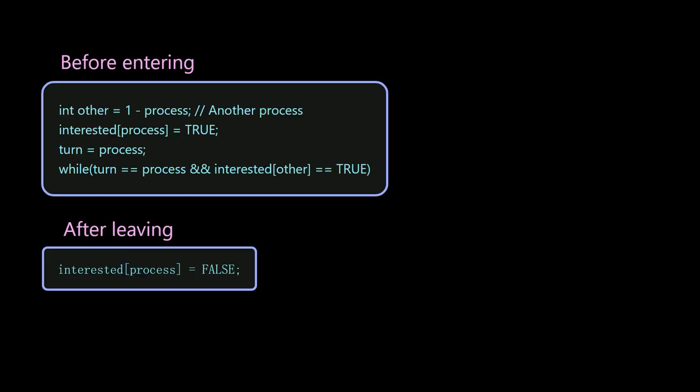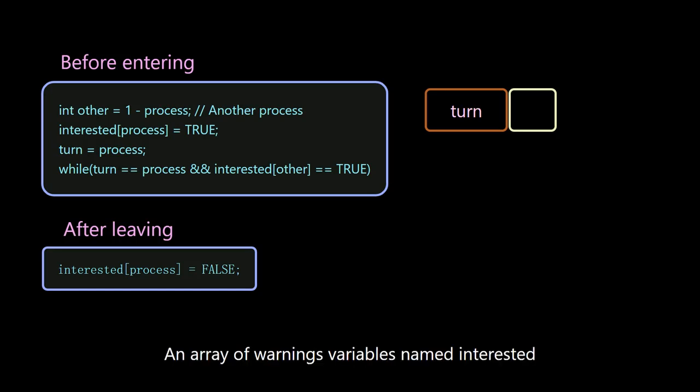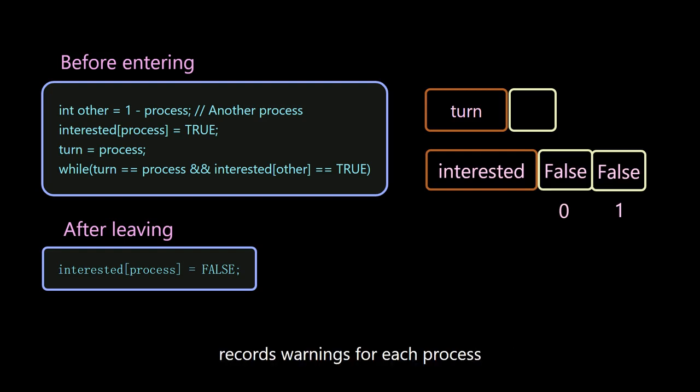This is its main code. We need a lock variable turn, which represents the turn of the process number. An array of warning variables named interested record the warnings for each process.